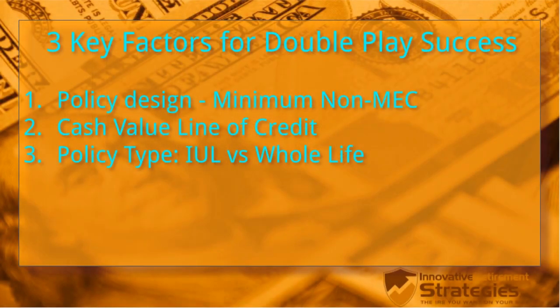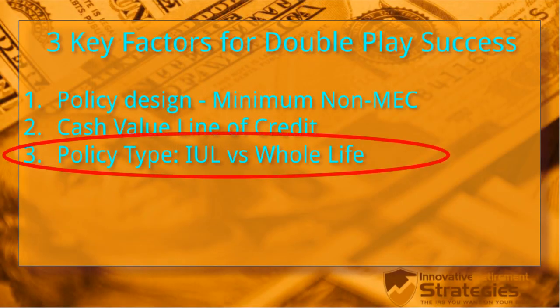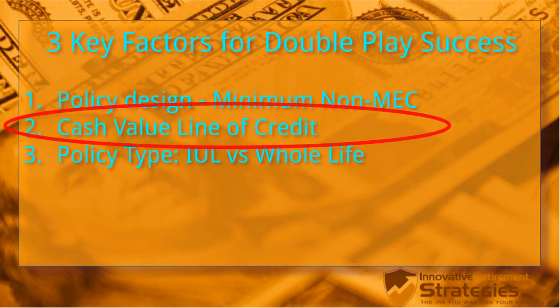I'd like to ask everyone: if you're doing infinite banking and real estate investing, did you look at the numbers before you did this? Throughout my videos I've touched on different factors that impact how successful you'll be. One of the first things you should do is look at the policy design. I've also covered policy selection — whether whole life or indexed universal life is the best tool. And lastly, how to access the cash value to get the most bang for the buck.